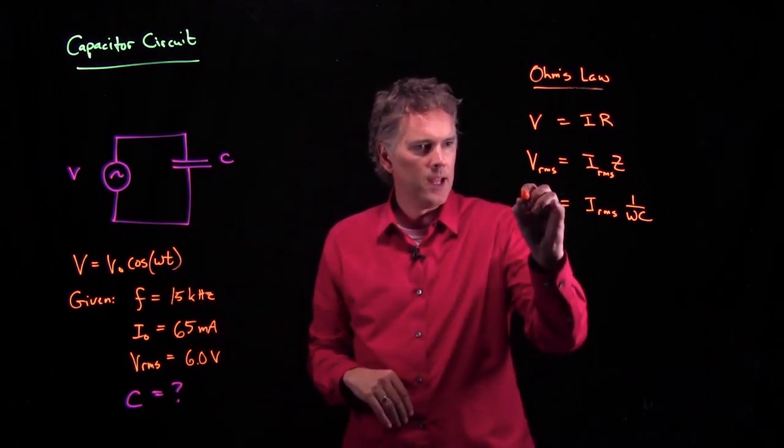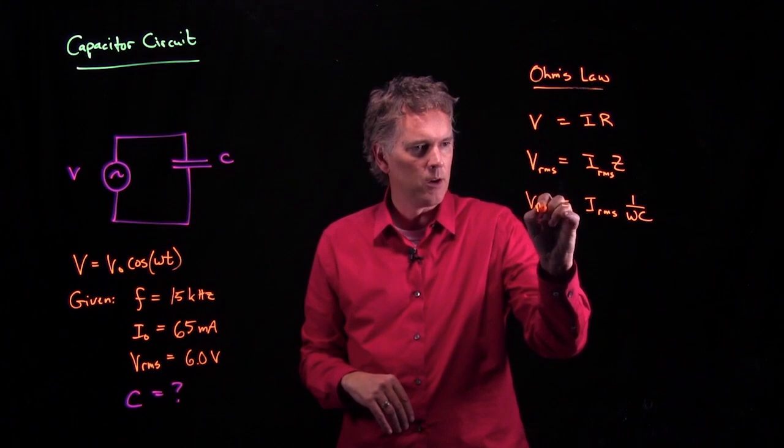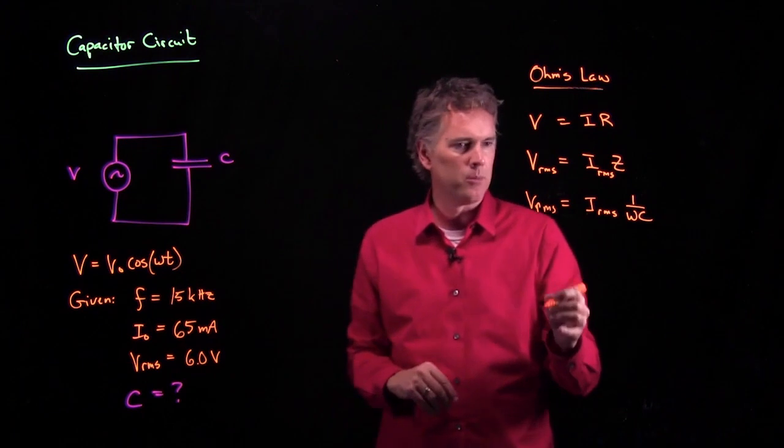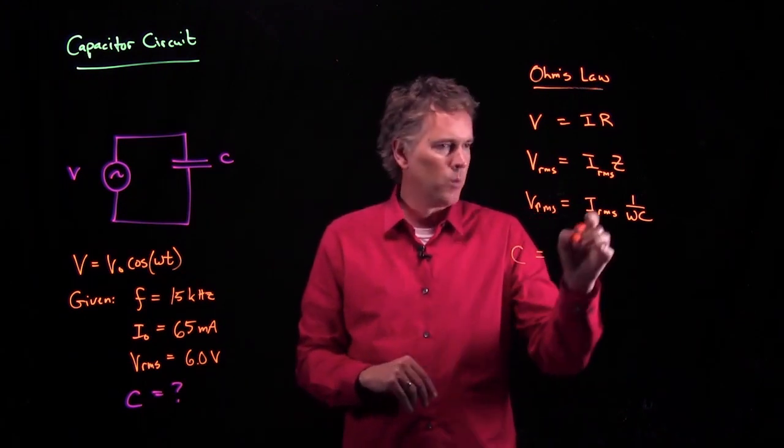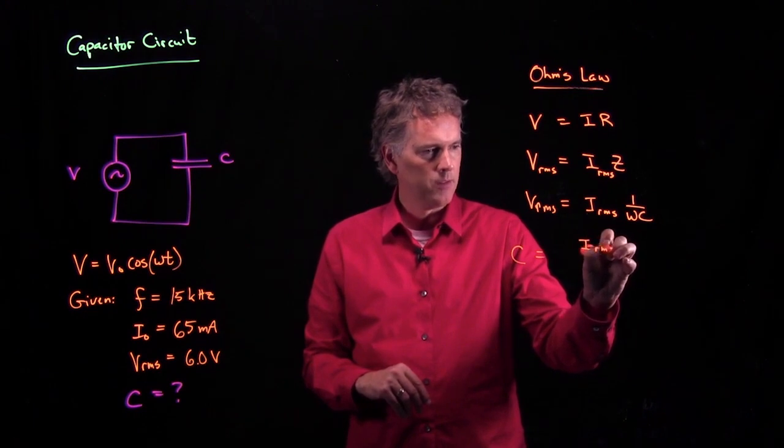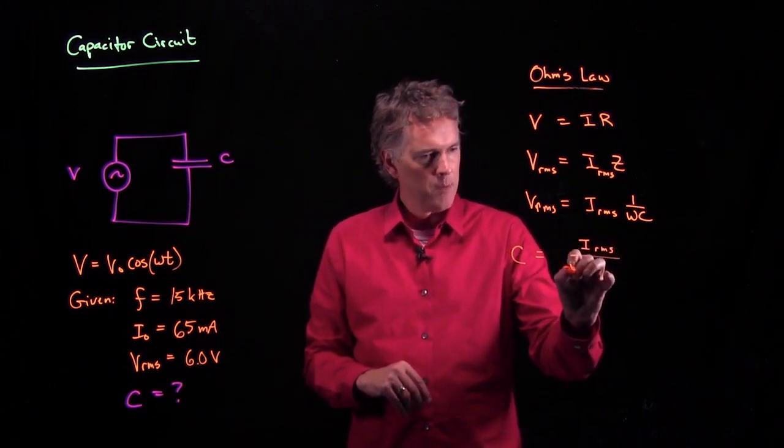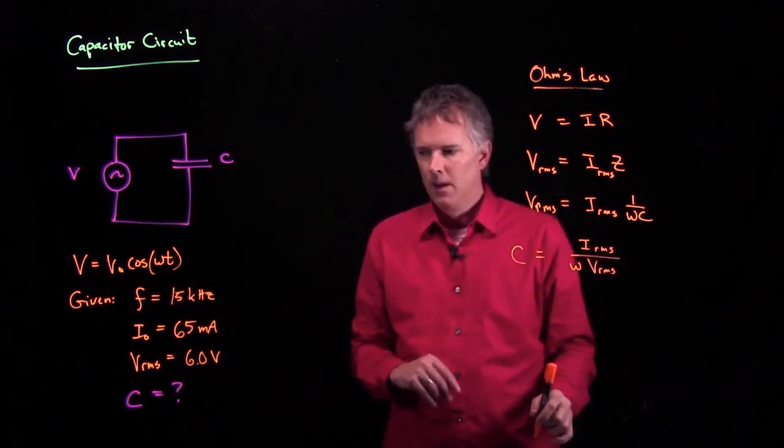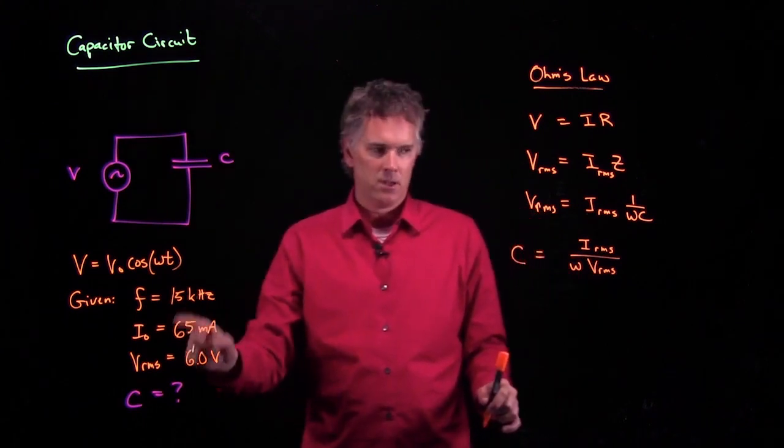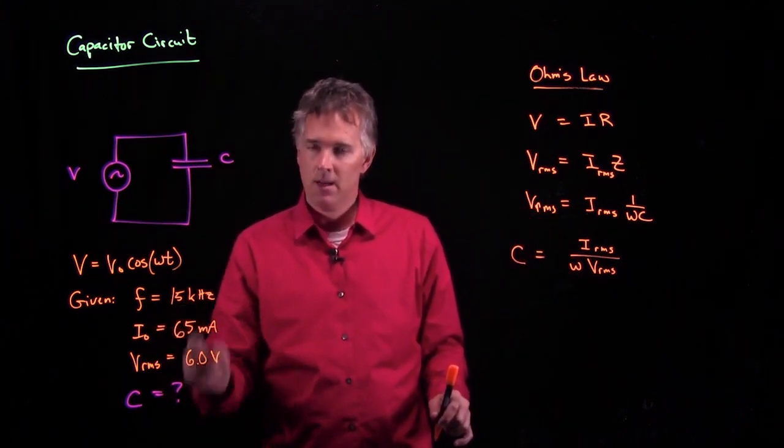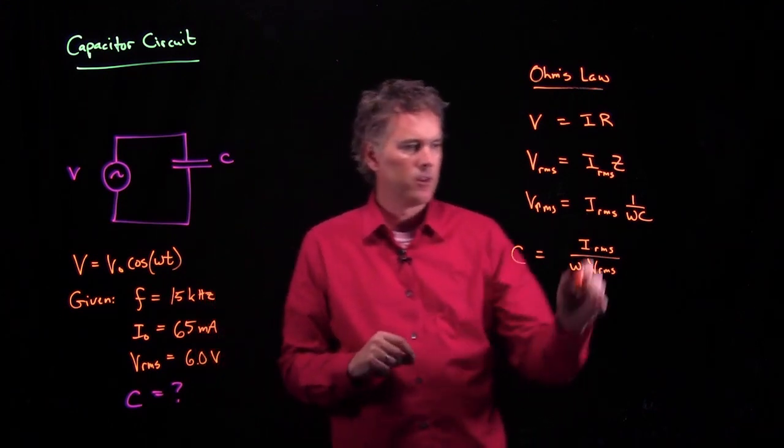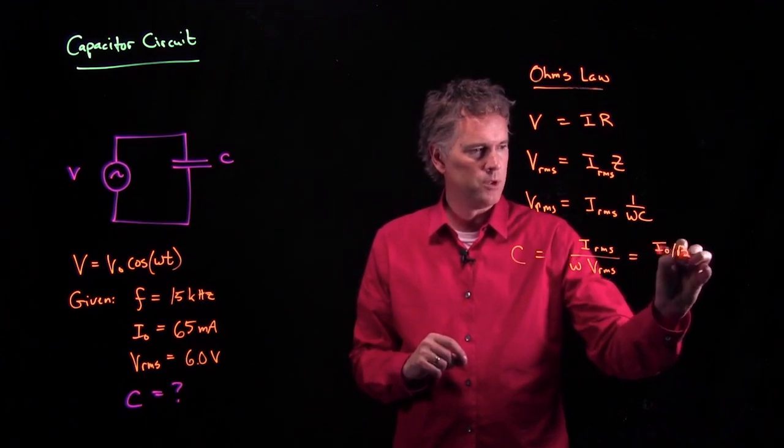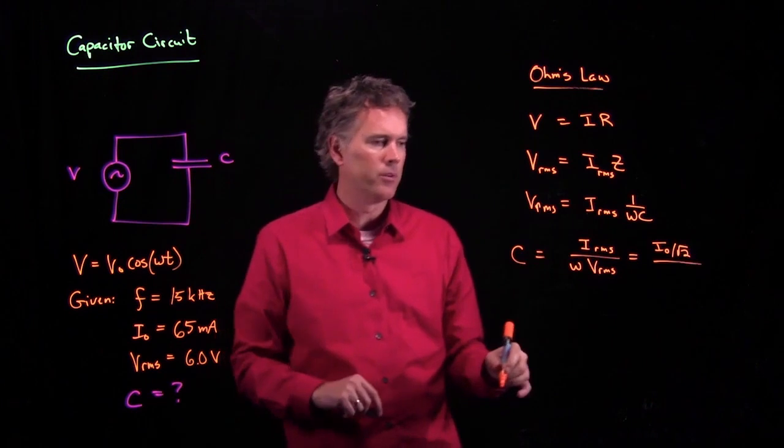All right, let's see if we can solve this equation now. V_RMS equals I_RMS times 1 over Omega C for C. Well, that's not too bad, right? We can move C over to the other side. And what do we have left on the right side? We have I_RMS, we have an Omega in the bottom, and then we have V_RMS in the bottom. Okay, but we're not given I_RMS, we're given I0. But of course, the peak current is related to I_RMS by root 2. I_RMS is just I0 over root 2.